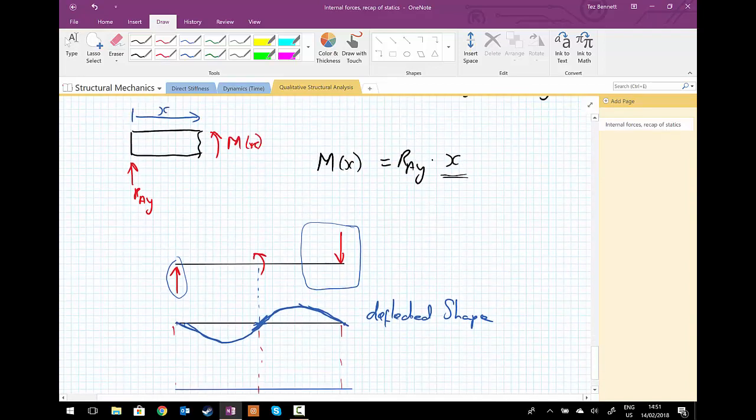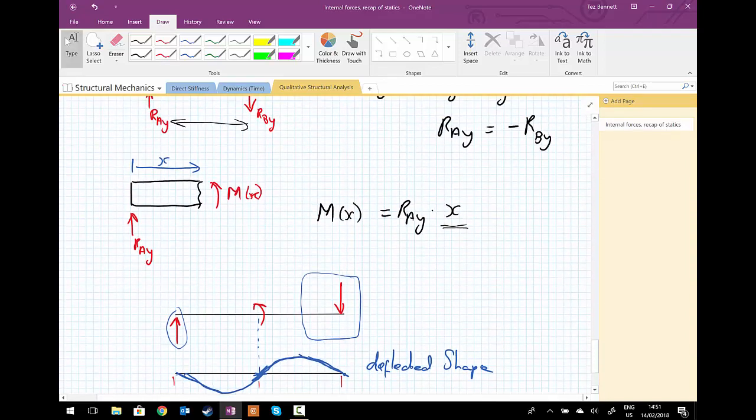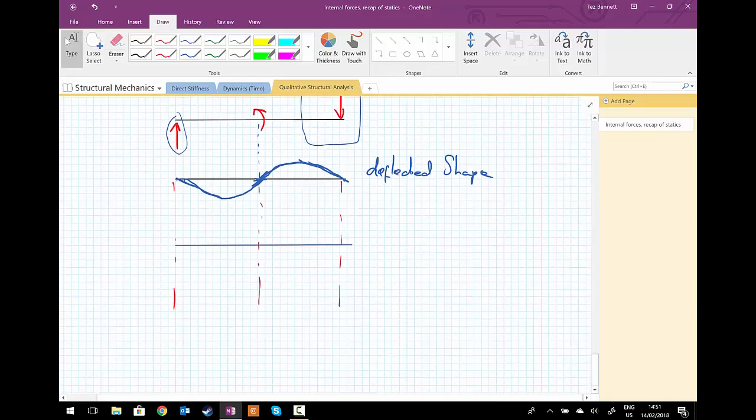And what we noticed is our bending moment equation was a linear function in x, the distance. The other thing we've also said about bending moment diagrams is we're going to draw them positive on the tension side or on the tension side of the beam.